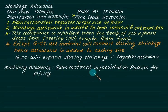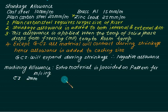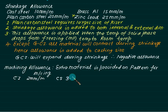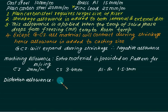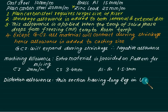In machining allowance, extra material is provided. Normally for cast iron this value is around 2 mm, and for cast steel it is 3 to 4 mm. For aluminum and brass, just remember which is minimum and which is maximum. Distortion allowance is normally provided for thin sections having long legs, and in U-shaped castings.